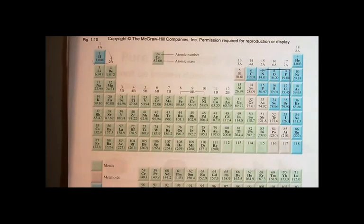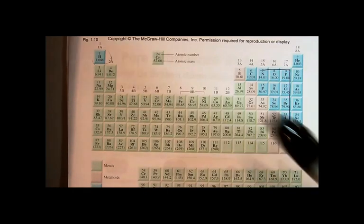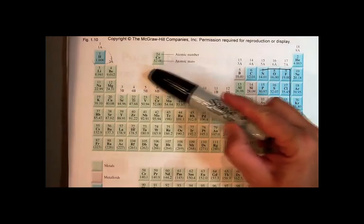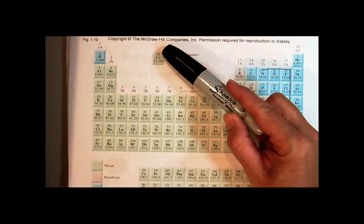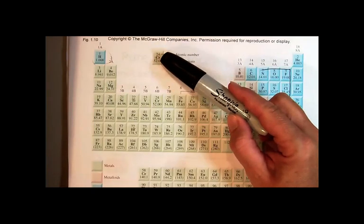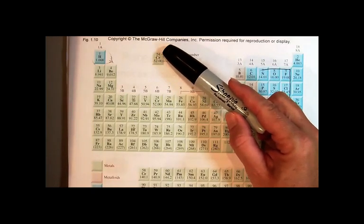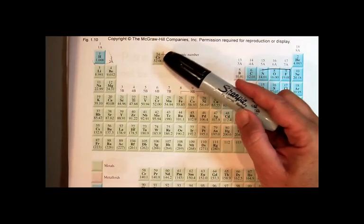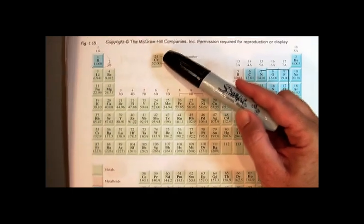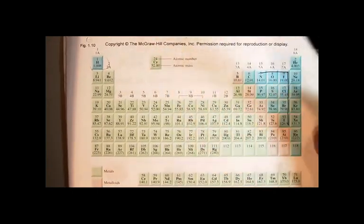Last unit, when we were looking at nuclear chemistry, we focused on just the elemental symbol and the atomic number and the mass number. We recognized that the atomic number told us how many protons were in the nucleus. Now we're going to start making better use of the periodic table even more this unit.